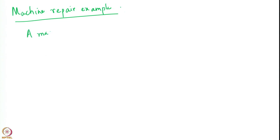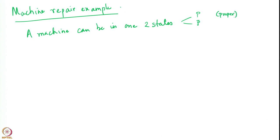Here is the machine repair problem. We have a machine that can be in one of two states: state p, which corresponds to a proper condition — the machine is in a workable condition — and state p-bar, which is the improper condition. So p is the good state and p-bar is the bad state.